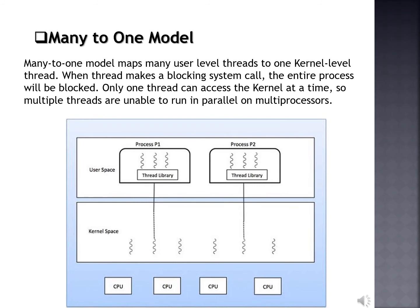The first one is the many-to-one model. The many-to-one model maps many user level threads to one kernel level thread. Thread management is done in user space by the thread library. When a thread makes a blocking system call, the entire process will be blocked. Only one thread can access the kernel at a time, so multiple threads are unable to run in parallel on multiprocessors. Thread management is handled by the thread library in user space, which is efficient in nature.